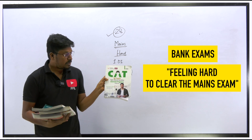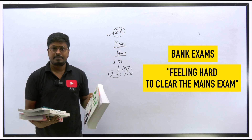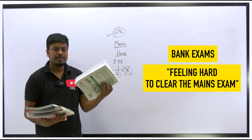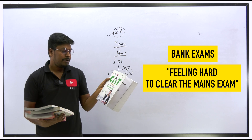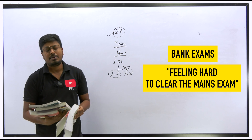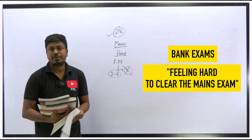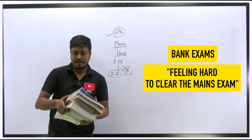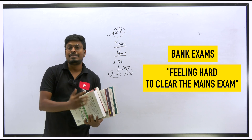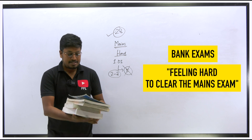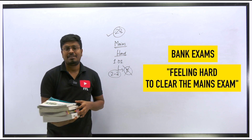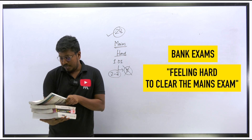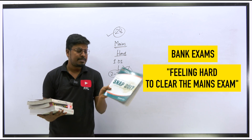The second book is Career Launcher MBA CAT exam — it has 30 years of previous year CAT exam question papers. You can refer to it for quantitative aptitude and miscellaneous topics. These two books will give you that standard tough-level question for the mains exam.